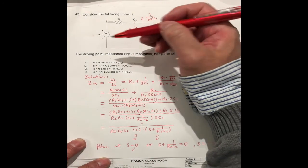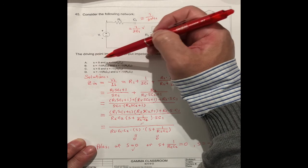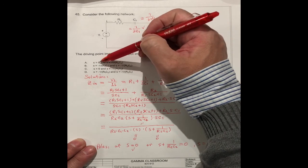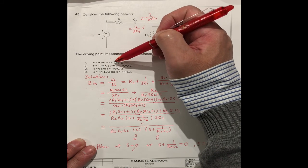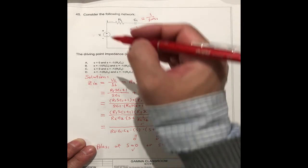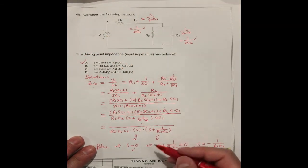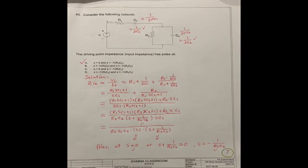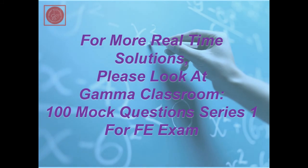So you see here, the answer should be S equals 0 and S equals -1/(R2C2). The correct answer should be A.